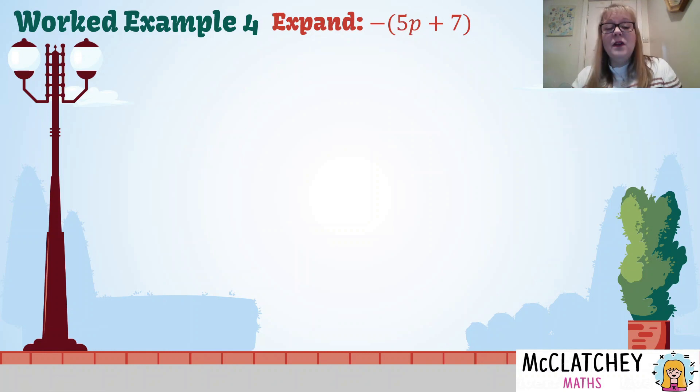So minus 1 times 5p gives me negative 5p, and minus 1 times positive 7 gives me negative 7. So some of these skills that are really coming out here: remember number one, everything inside the brackets is multiplied by the number directly outside the brackets. Remembering that sign before...